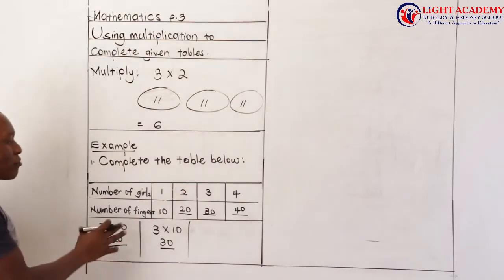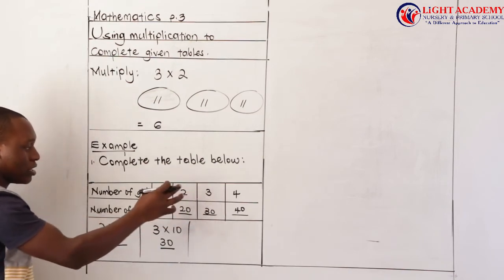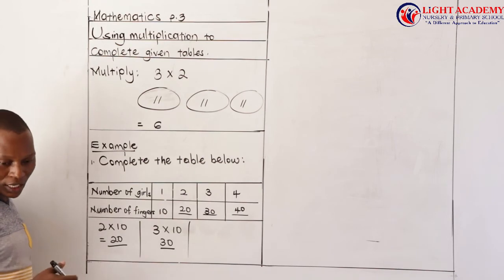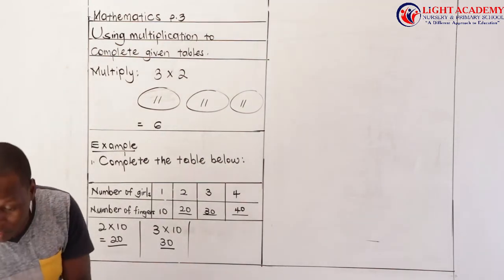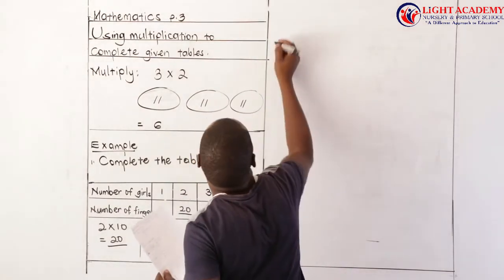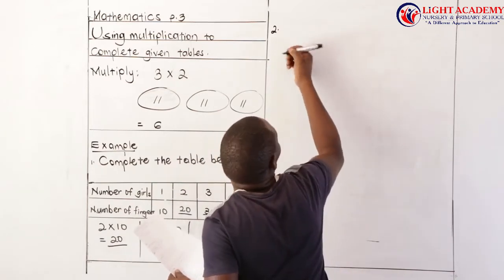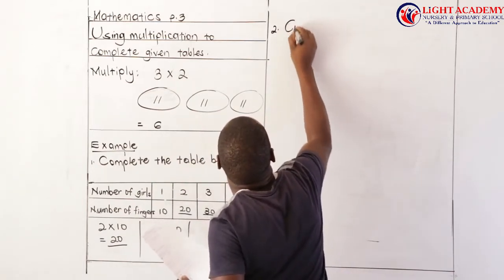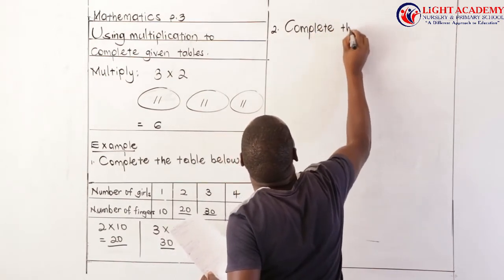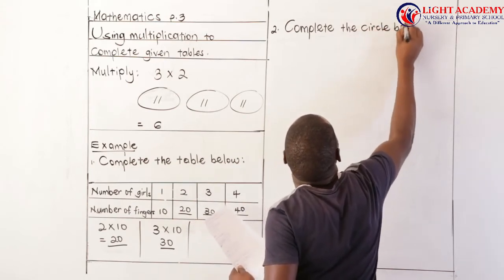Don't forget that after the working, when you get your answers, you put them in the missing spaces in the table — that is what we call completing the table. I can also give another example. Example two: instead of a table, they can use a circle. The question says complete the circle below.